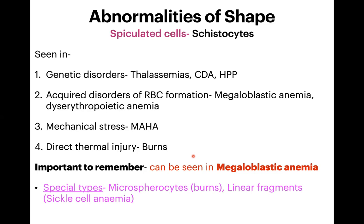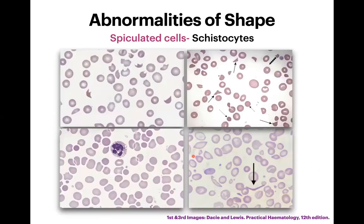There are certain special types of schistocytes: microspherocytes are found in cases of burns, and linear fragments are found in sickle cell anemia. In the images shown, the first image demonstrates irregular shapes with spines; the second shows a triangular cell, a helmet-shaped cell, microspherocytes, and an irregularly contoured cell — all of which should be called schistocytes, not by different names. The microspherocytes shown are from a burn case. The linear fragment seen in sickle cell anemia is a schistocyte, not a sickle cell.